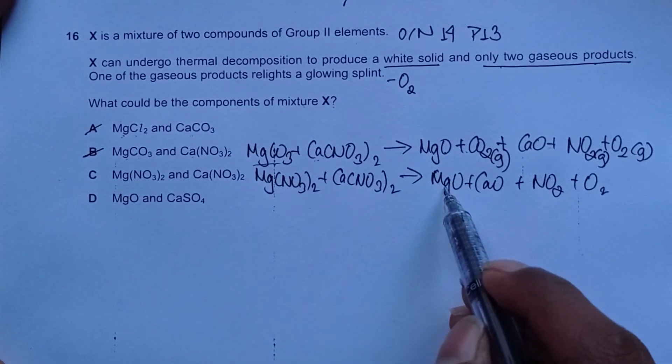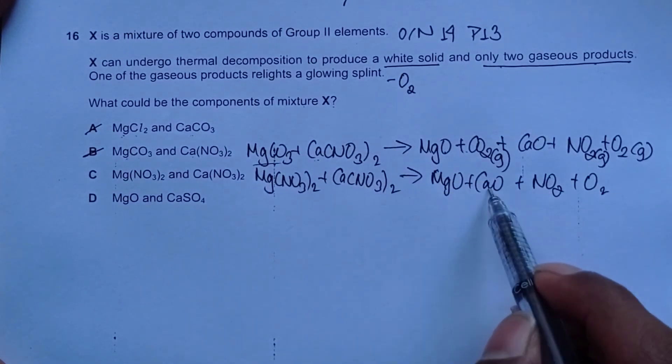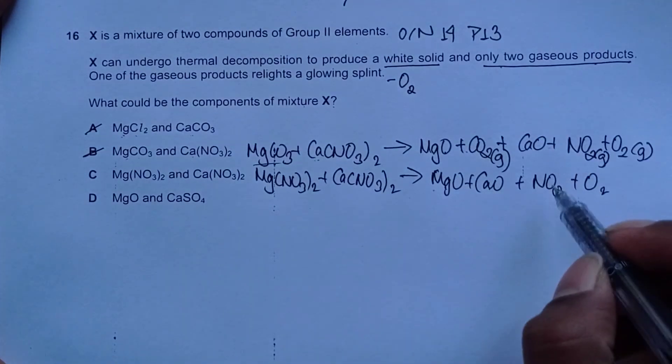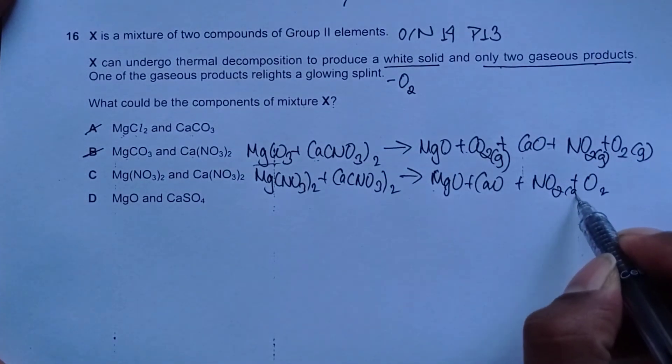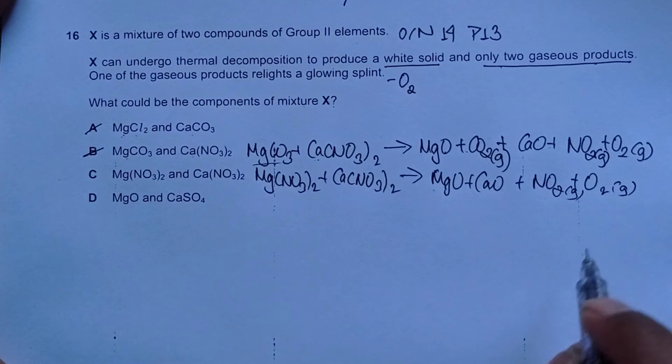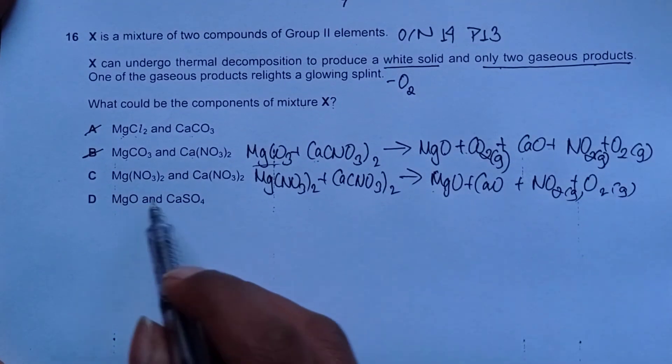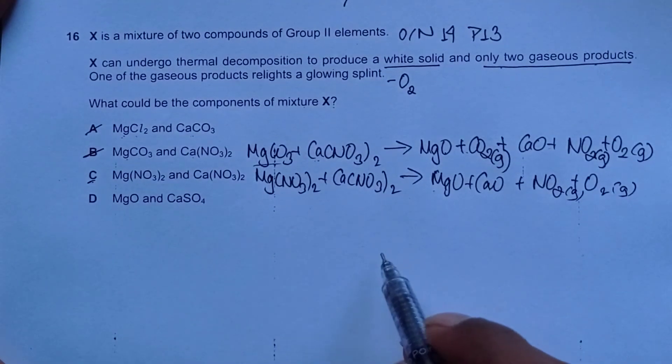Everything out of this produces white solid. Both of these are white solids and only two gaseous products. Nitrogen dioxide is a gas, oxygen is a gas and we only have two gaseous products. Option C could be the final correct answer.